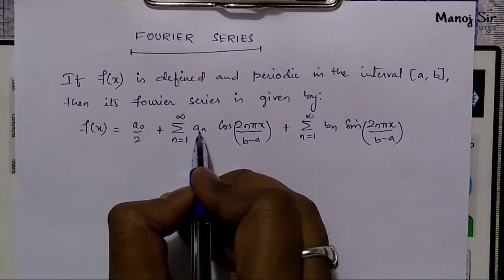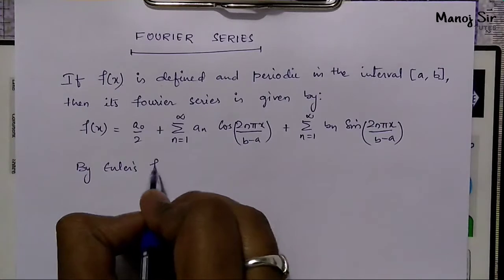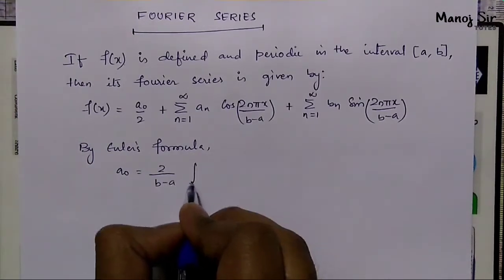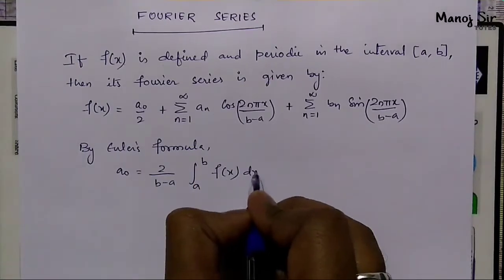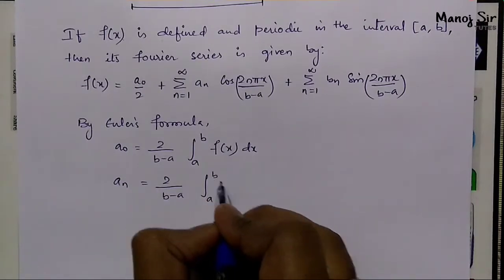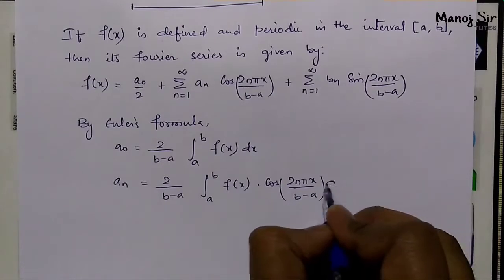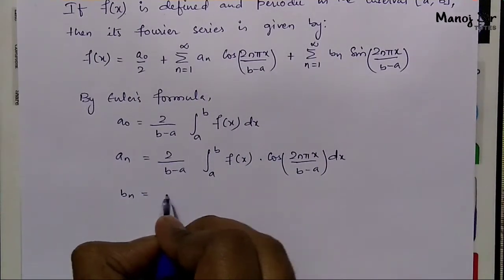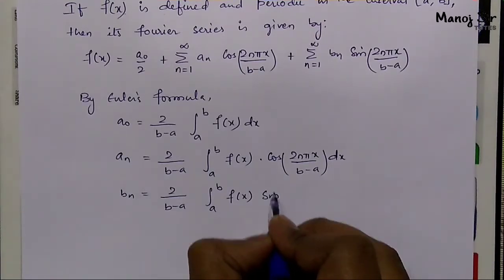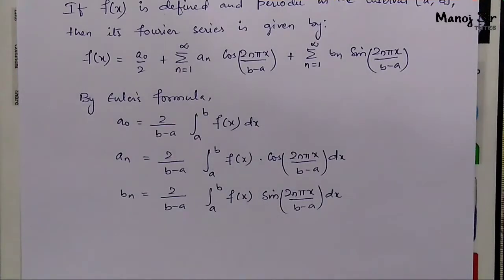Here a naught, aₙ, and bₙ are given by Euler's formula. We have: a naught equals 2/(b−a) times integration from a to b of f(x) dx; aₙ equals 2/(b−a) times integration from a to b of f(x) cos(2nπx/(b−a)) dx; and bₙ equals 2/(b−a) times integration from a to b of f(x) sin(2nπx/(b−a)) dx. This is the general formula for Fourier series.